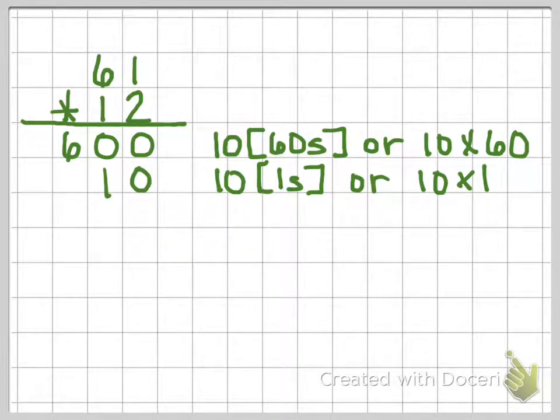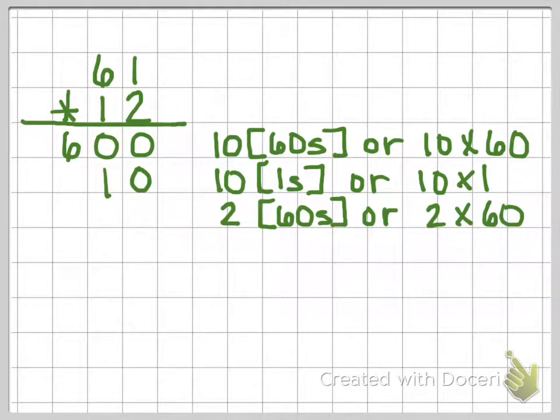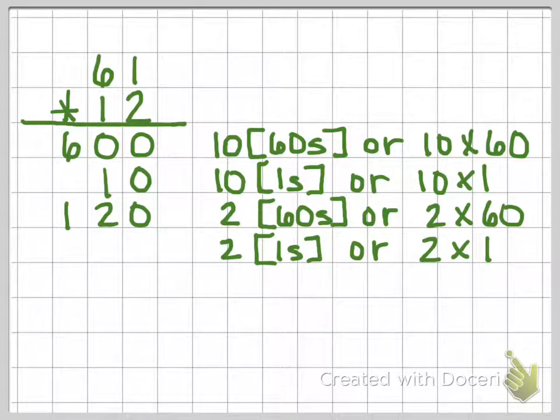And then we are going to move over to that 2, and we are going to have two 60s, or 2 times 60, which is going to give me 120. And then we have two 1s, or 2 times 1, which is going to give me 2.